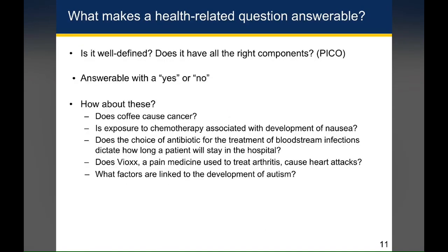You'll also want to make sure that the way you ask the question is actually answerable. The first part of that is: is the question well-defined? Make sure the question includes a population, an intervention or exposure, a comparison group, and an outcome. Ideally, your question should be answerable with a yes or a no. Because if you ask a really vague question, at the end of your analysis you may not be able to tell people yes or no, which makes it very unclear what you've actually learned from the exercise.